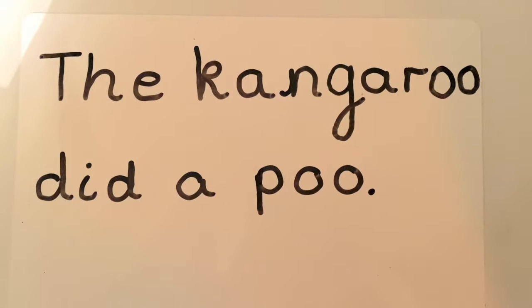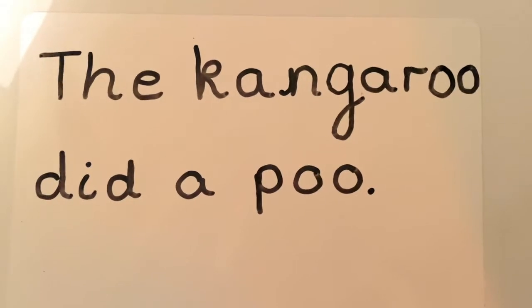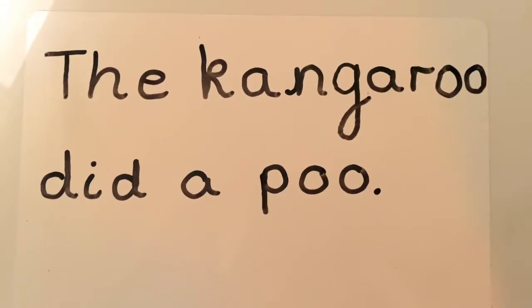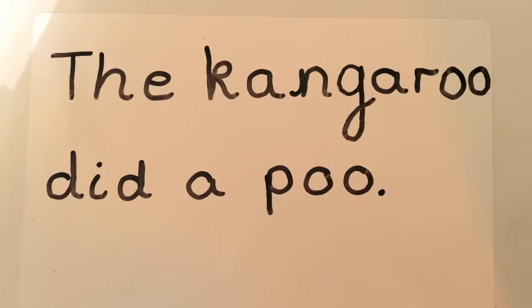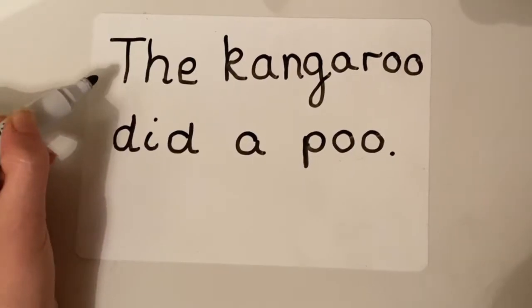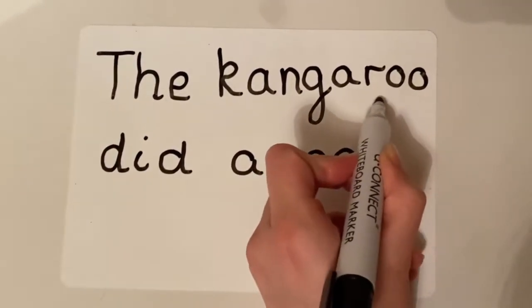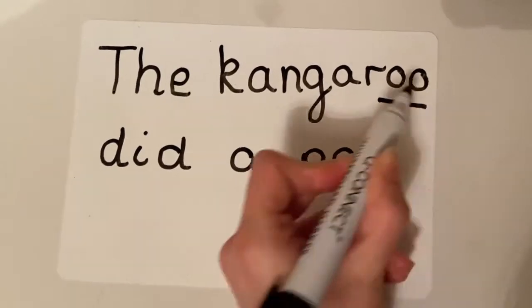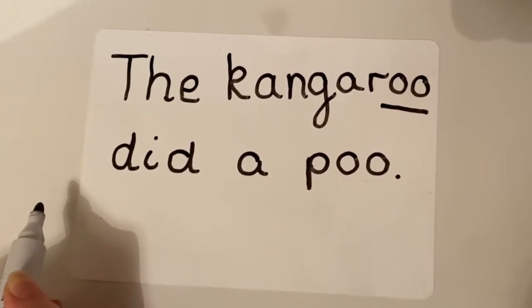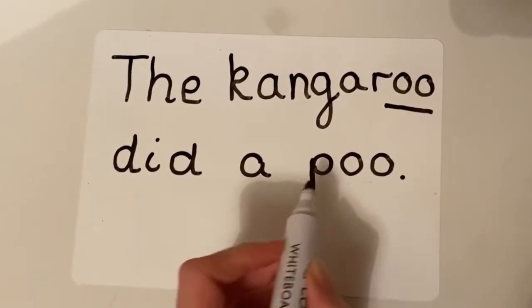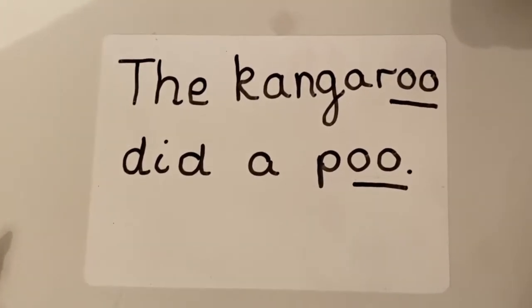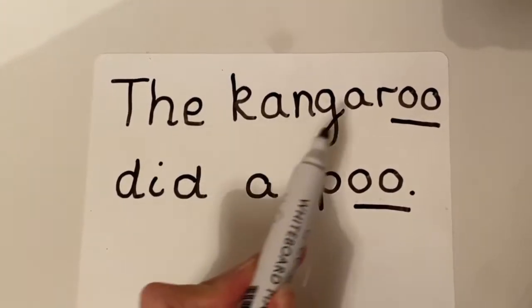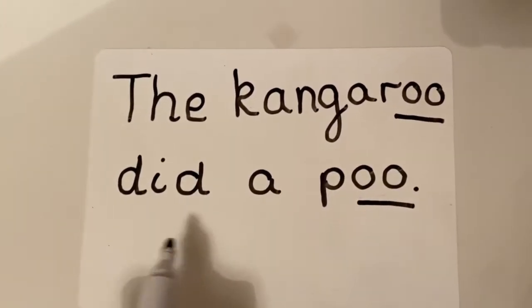So we've got another silly sentence here. This is your old learning. I'd like you to pause this video and have a go at reading this silly sentence. We have the kangaroo, with the long OO sound, did a poo — an OO sound again. The kangaroo did a poo.